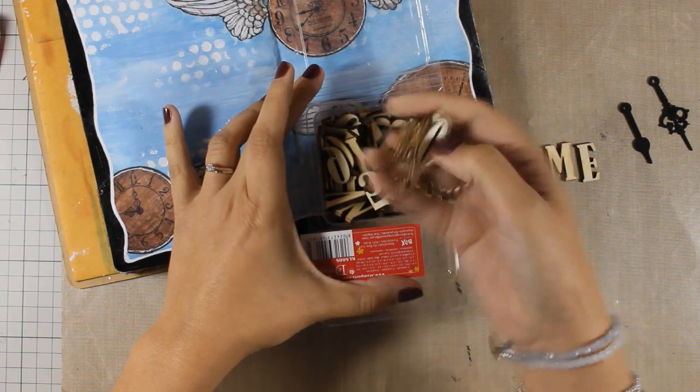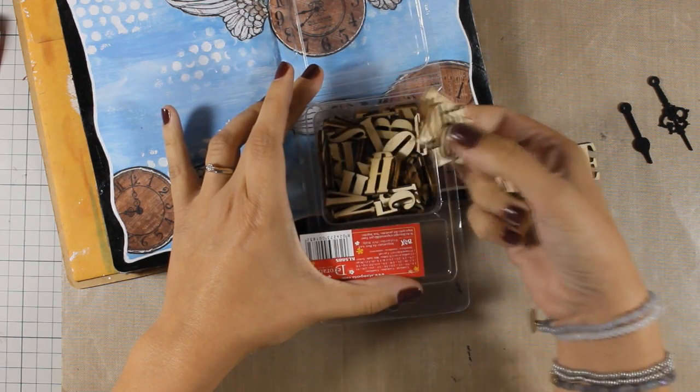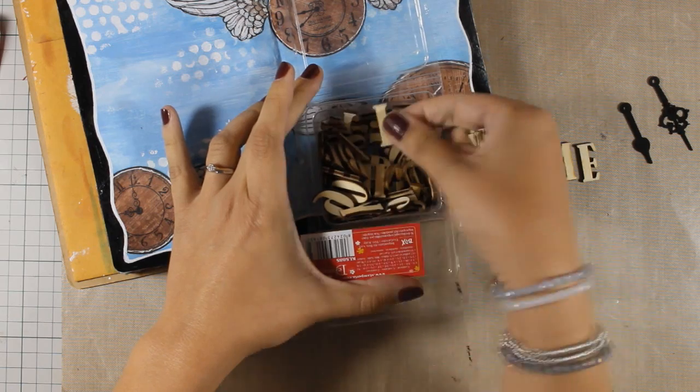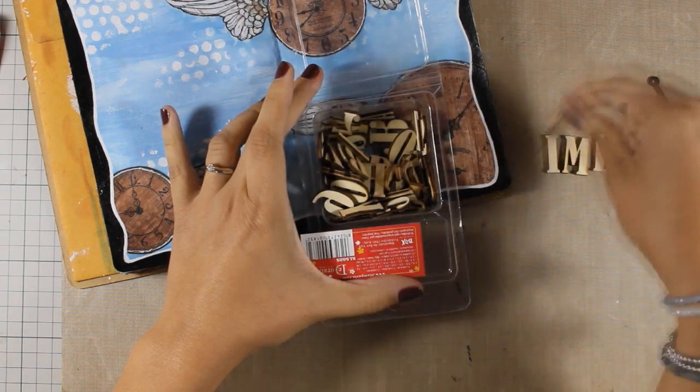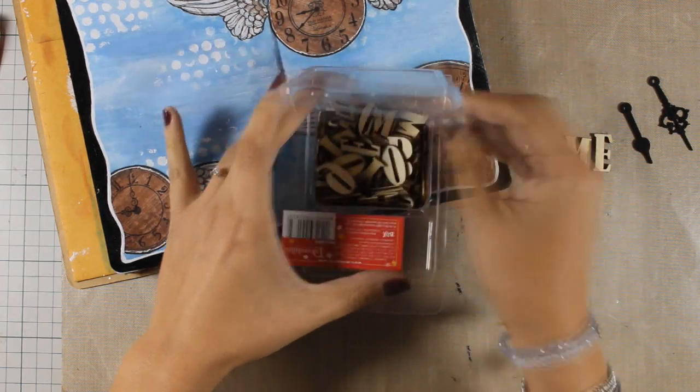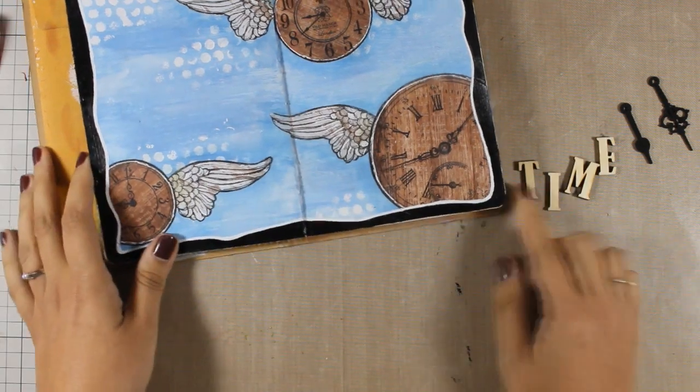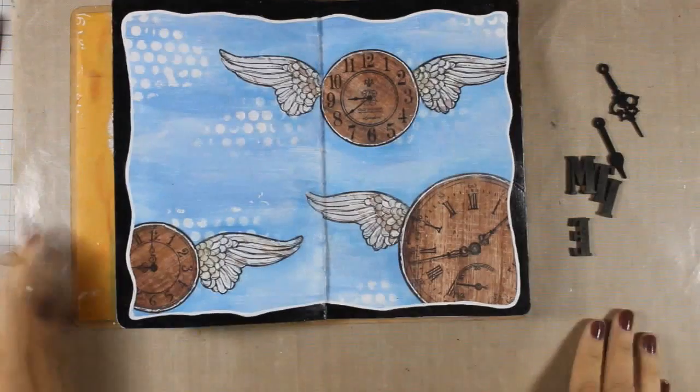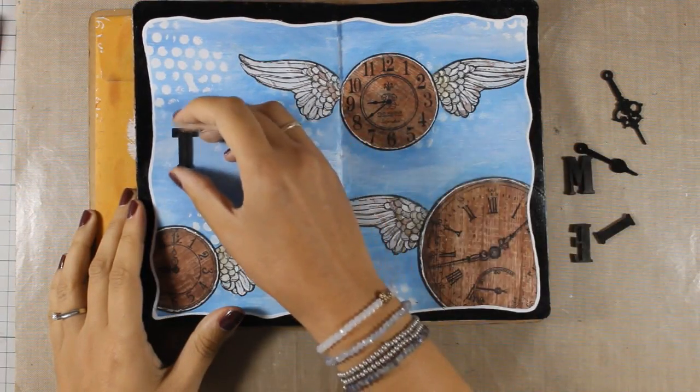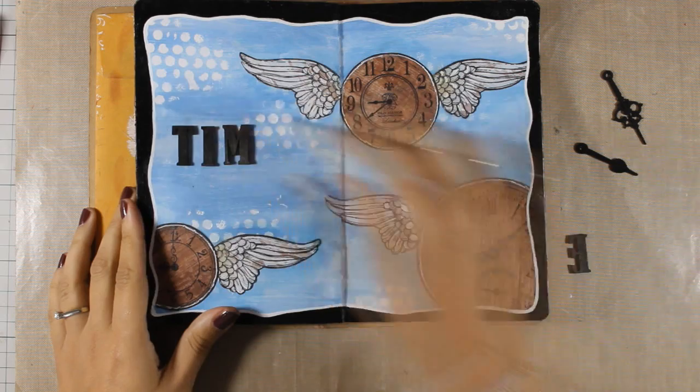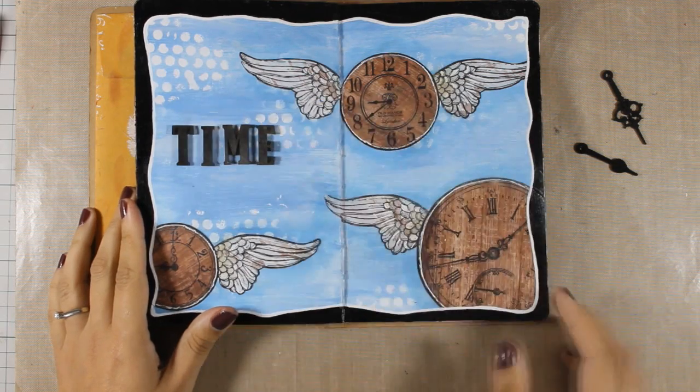Now I am going to add wood veneer letters, also by Stamperia, and I am going to spell the word TIME. So I am going to color them black with my black acrylic paint as well and now I am ready to stick everything on my page. So I am trying to decide where everything is going to go and then I'm going to use my white glue and stick everything down.